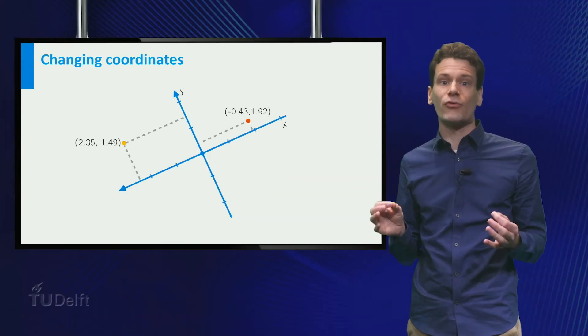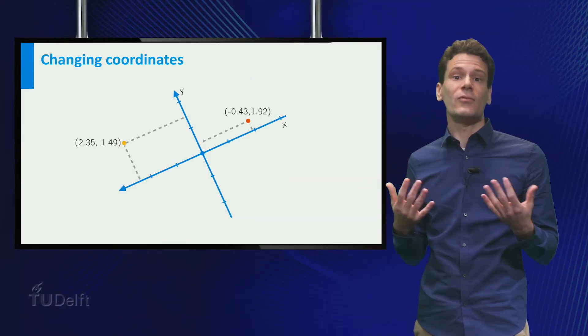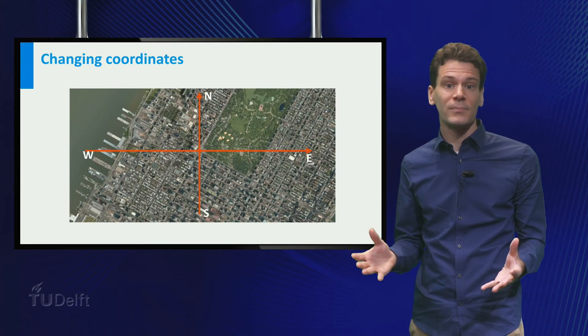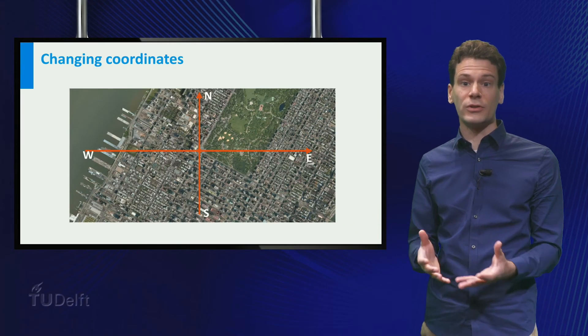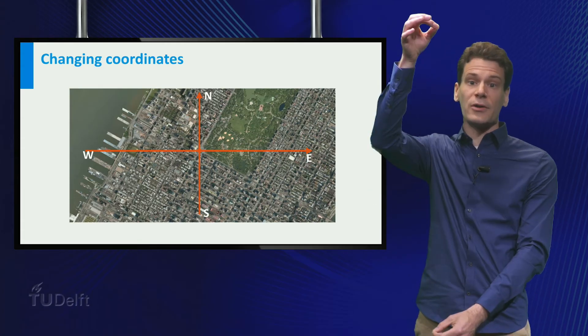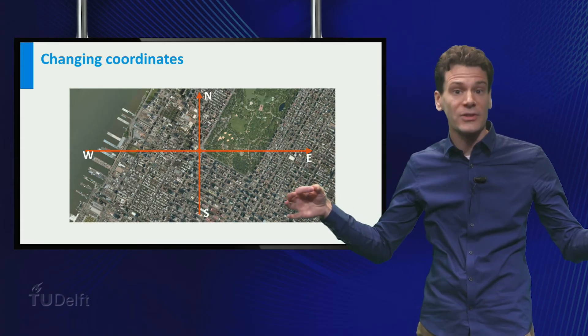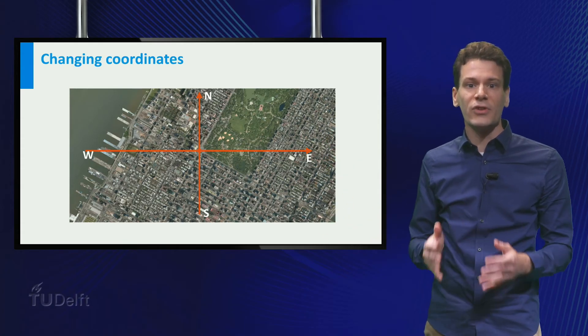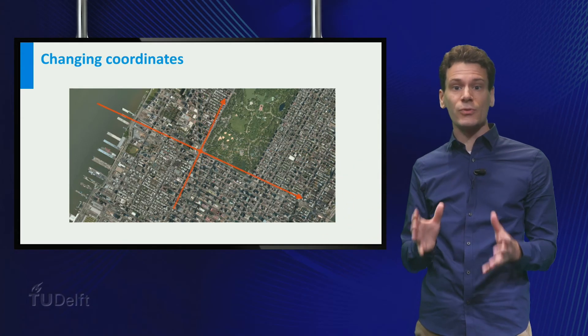Actually, we can use all this freedom to our advantage. For example, suppose you want to describe your position in Manhattan. Then you can use the standard GPS coordinate system with one axis north-south and one axis east-west. But if you look at the map, you see that it is very convenient to align the axes to the street plan.